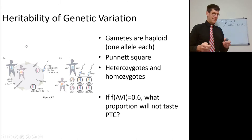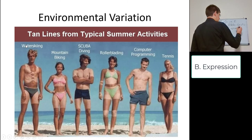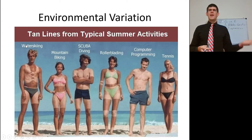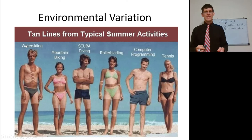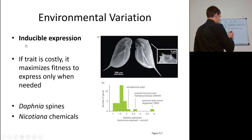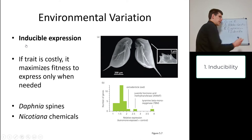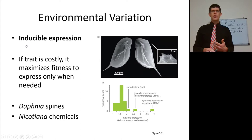Let's talk about environmental variation — genotype by environment. A purely genetic factor is your G. With AVI and PAV, it doesn't matter how you were raised — you either can taste phenylthiocarbamide or you can't. Environmental variation is different. For example, tan lines from summer activities like mountain biking or water skiing are variation caused by the environment. We're going to start with something called inducible expression — a trait can be turned on or off. This is generally true for costly traits.